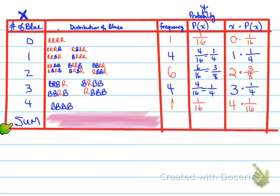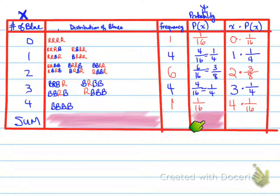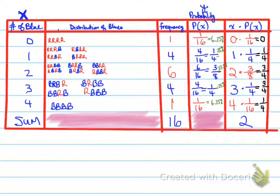What's important is verifying that our probabilities sum to 1. Adding up: 1/16 + 4/16 + 6/16 + 4/16 + 1/16 = 16/16 = 1, which is 100%. More importantly, summing all x times P(x) gives the expected value of 2, meaning 2 blues are expected when spinning four times.